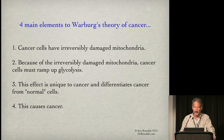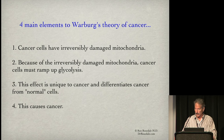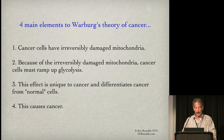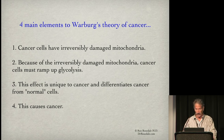There are four elements to Warburg's theory of cancer: cancer cells have irreversibly damaged mitochondria; because of that, cancer cells must ramp up glycolysis; this effect is unique to cancer and differentiates it from normal cells; and this causes cancer. We're going to look at all four of those.